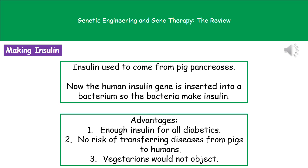In terms of the advantages for us: number one, we've got enough insulin for every diabetic, so there's no shortage. Secondly, there's no risk of transferring any diseases from the pigs to humans. And finally, if anyone was a vegetarian, there's nothing that they could object to.